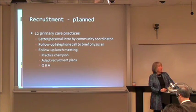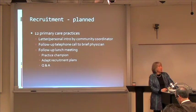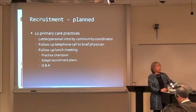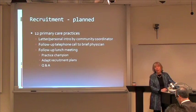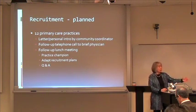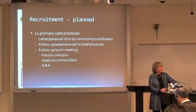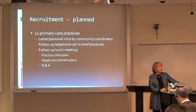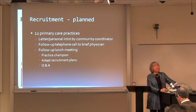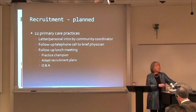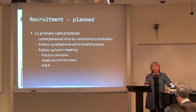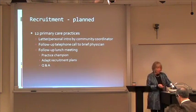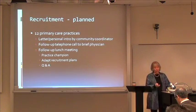We looked at our map and located 12 primary care practices that spanned our target areas. We initially sent a letter to the physician, or the community coordinators already had a personal relationship and contacted them about interest. Those that were interested had a follow-up telephone call with me and the project manager, and if they continued to express interest, we had a follow-up lunch meeting — lots of road trips down to the Black Belt in year number one. At that point we briefed the entire staff about the study, identified a practice champion, talked about how recruitment plans should be adapted to their practice, and gave lots of opportunity for questions. Uniformly, these 12 practices were wildly enthusiastic about this program because diabetes control, as you might imagine, was not terrific. They had no doubts they were going to send us hundreds of patients within a month or two.